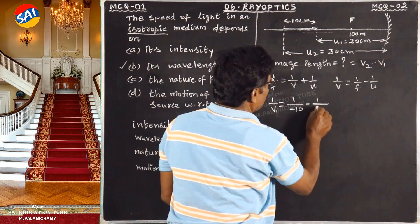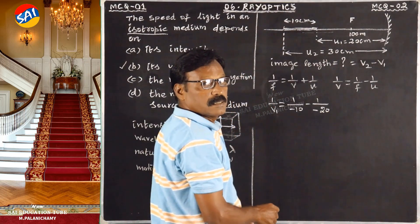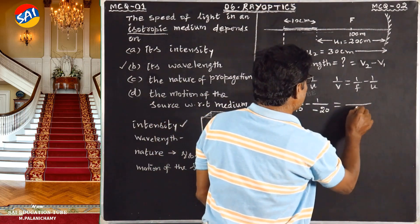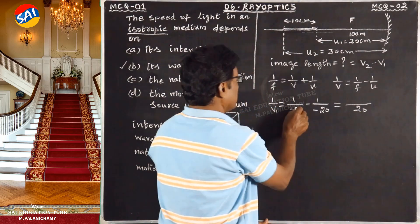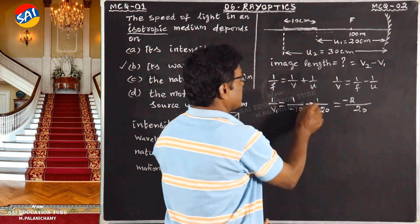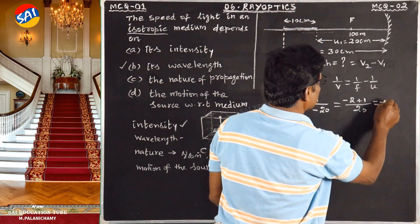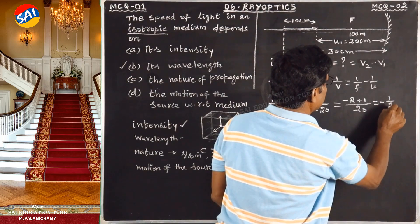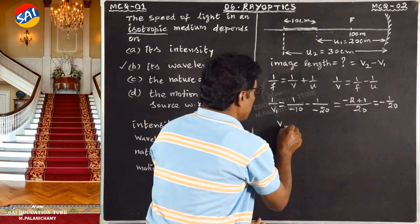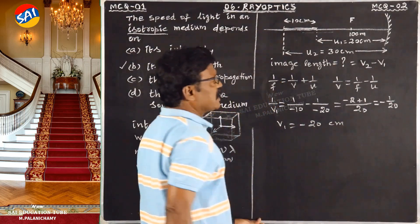u1 is 20 centimeters, so applying sign convention it is minus 20. Equal to minus 1 by 10 plus 1 by 20 — minus minus gives plus — equal to minus 1 by 20. Therefore v1 equals minus 20 centimeters.